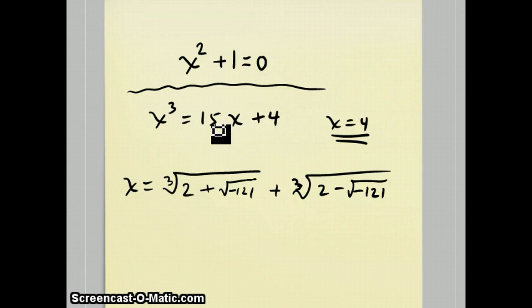It said right in the formula that if the cube of one third of the coefficient is less than the square of half the constant. And in this case, the square of half the constant is 4 over 2 squared, which is 4. And the cube of one third of the coefficient was 125.